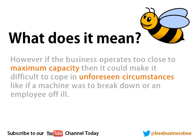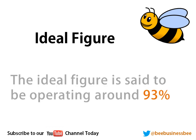However, if your business operates too close to maximum capacity, it might be difficult to cope with unforeseen circumstances — such as a machine breaking down or an employee falling ill. If you're working at 99% or 100% capacity and something goes wrong, you won't be able to fulfill all orders. Customers may go elsewhere, damaging your reputation for reliability and the added value of your brand and image.